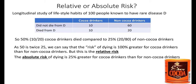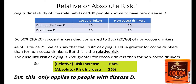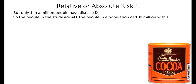Whereas the absolute risk of dying is 25% greater for cocoa drinkers than for non-cocoa drinkers. So the relative risk increase is 100% and the absolute risk increase is 25%. You might be thinking that on the previous newspaper headline, which I said was equivalent to the first one, the risk increase was minuscule — nothing like 25%. Well, the difference is that what we're talking about here are the relative and absolute risk increases for people with disease D. These figures only apply to people with disease D. But what about the rest? We know that only one in a million people have the disease.